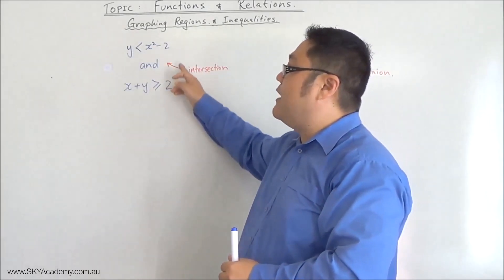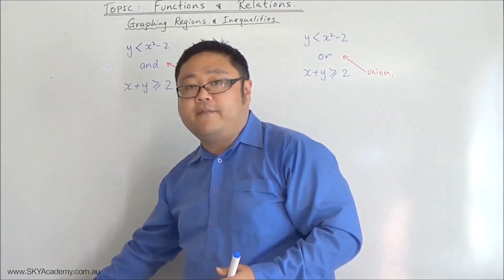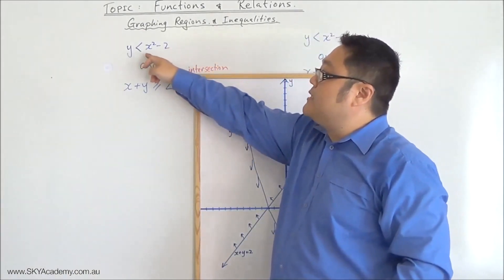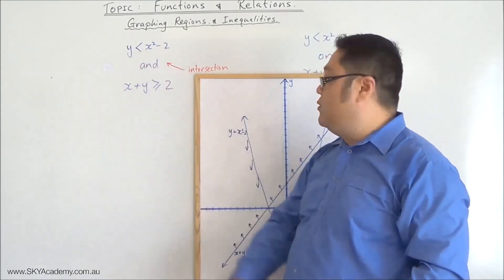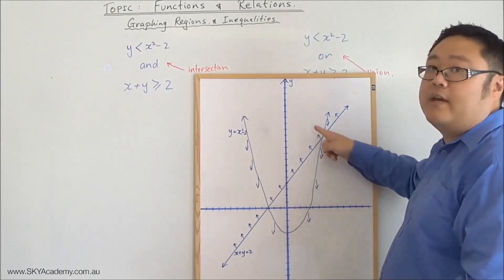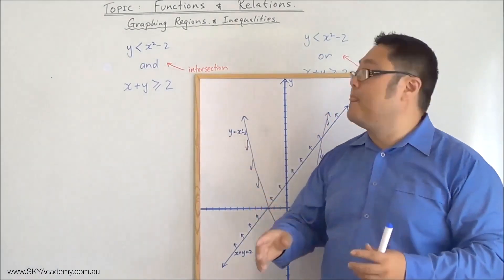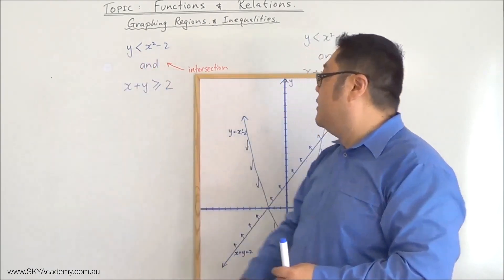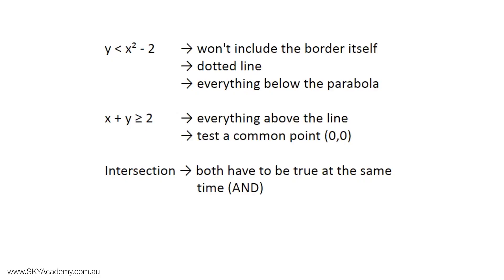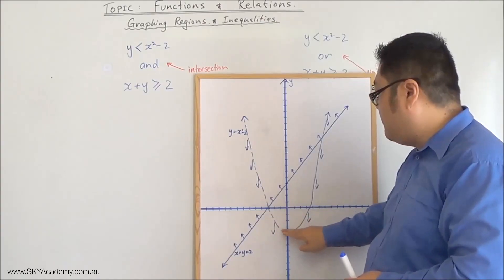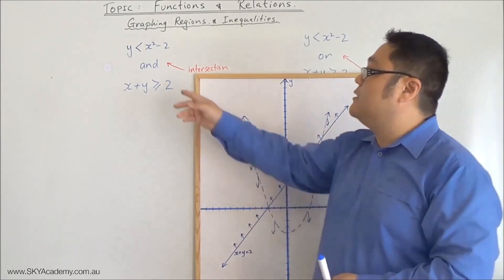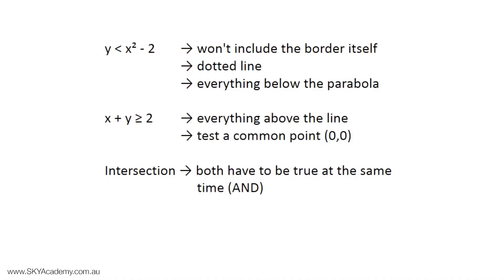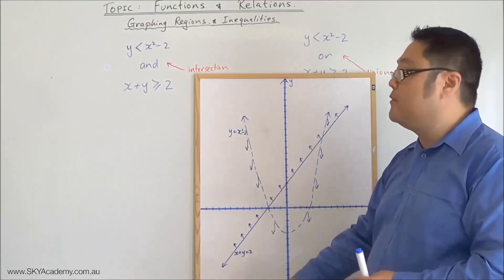I've gone ahead and graphed these two functions. y is less than x squared minus 2 gives us a parabola — that's the border. Because it's less than and not less than or equal to, it won't include the border itself, so I've made it a dotted line. Less than will include everything below the parabola.